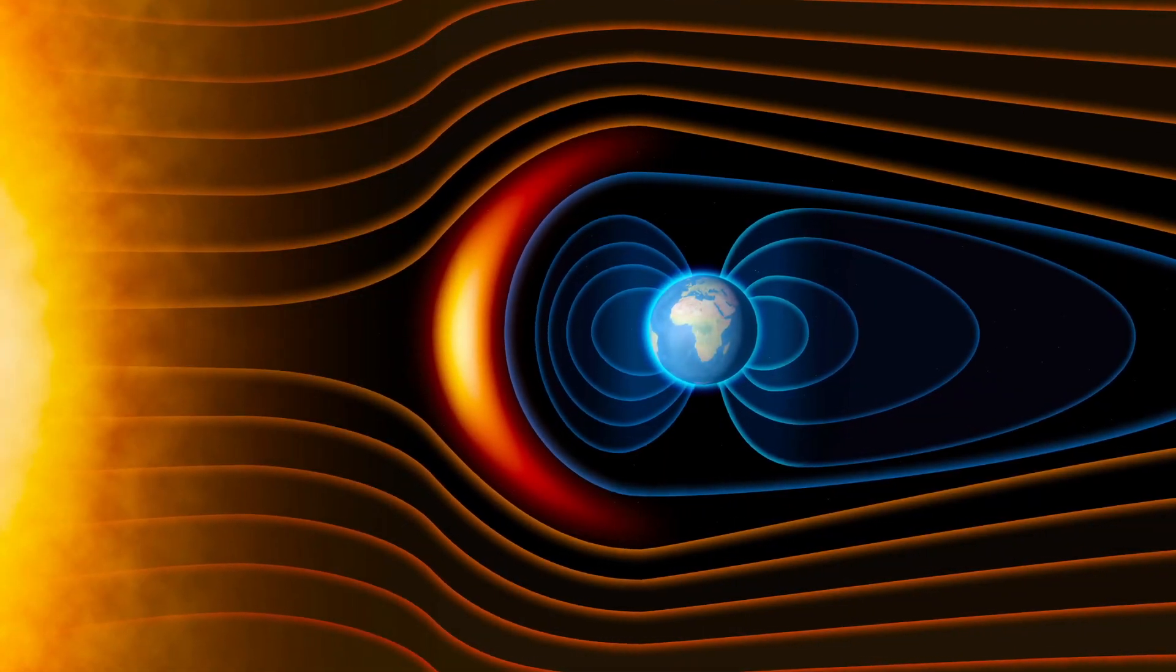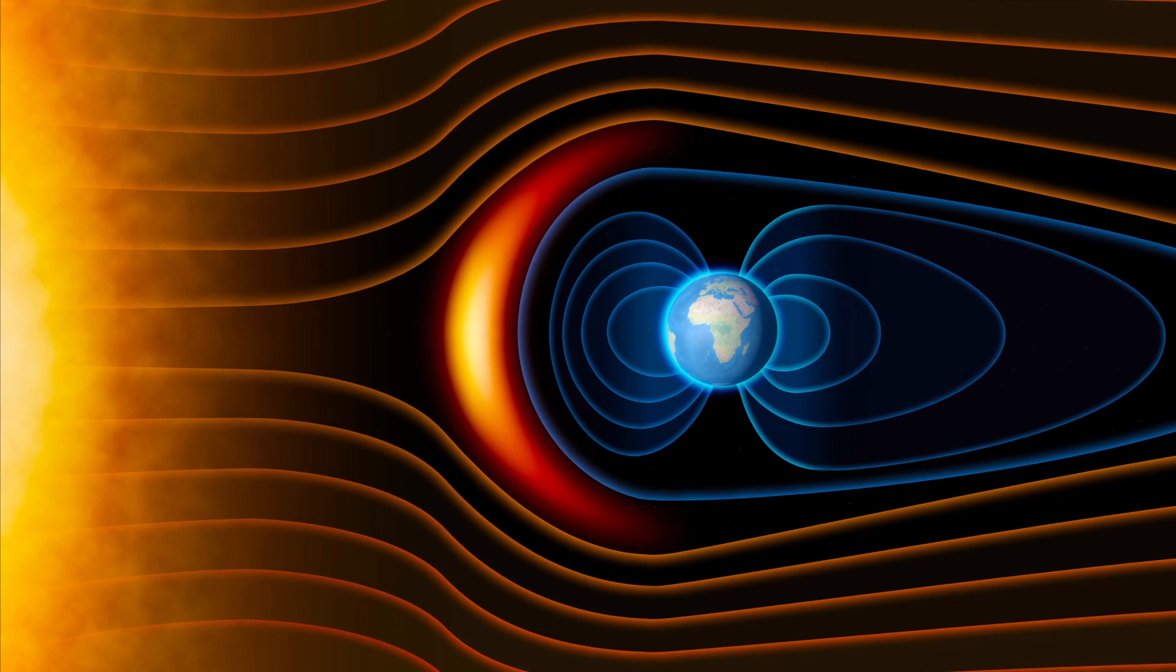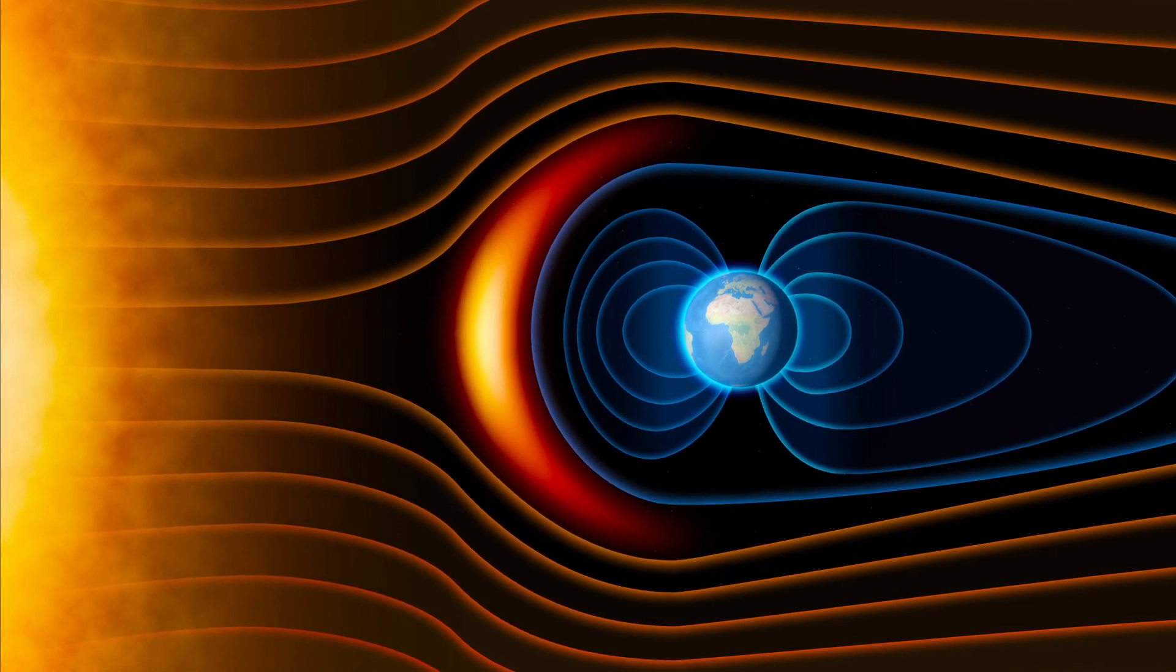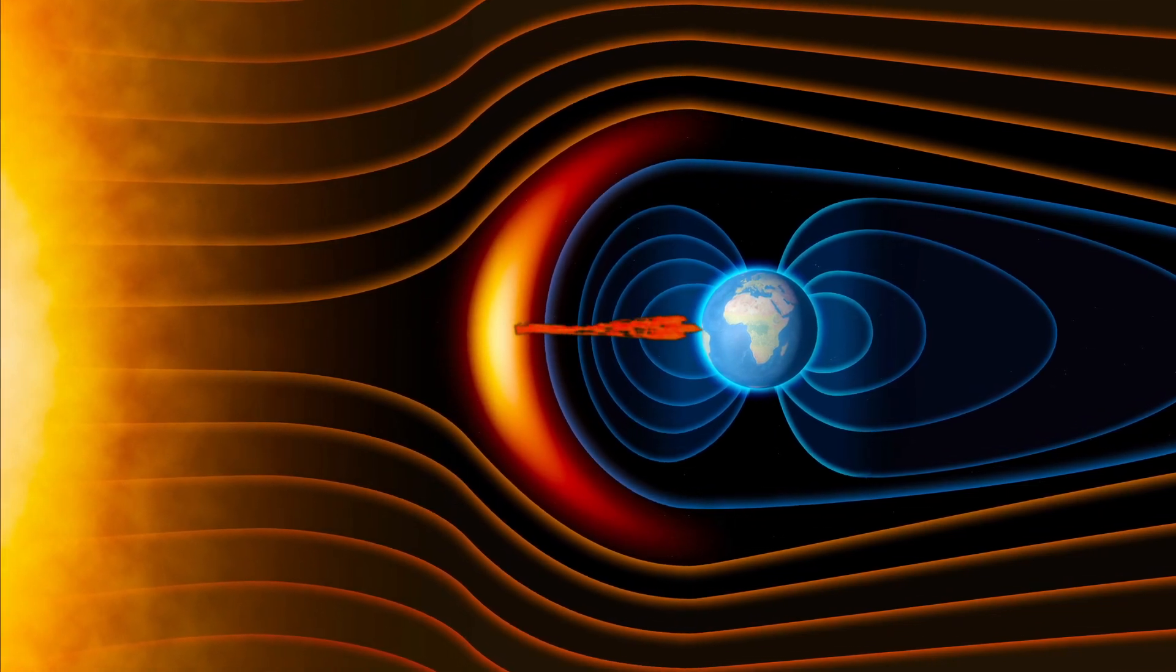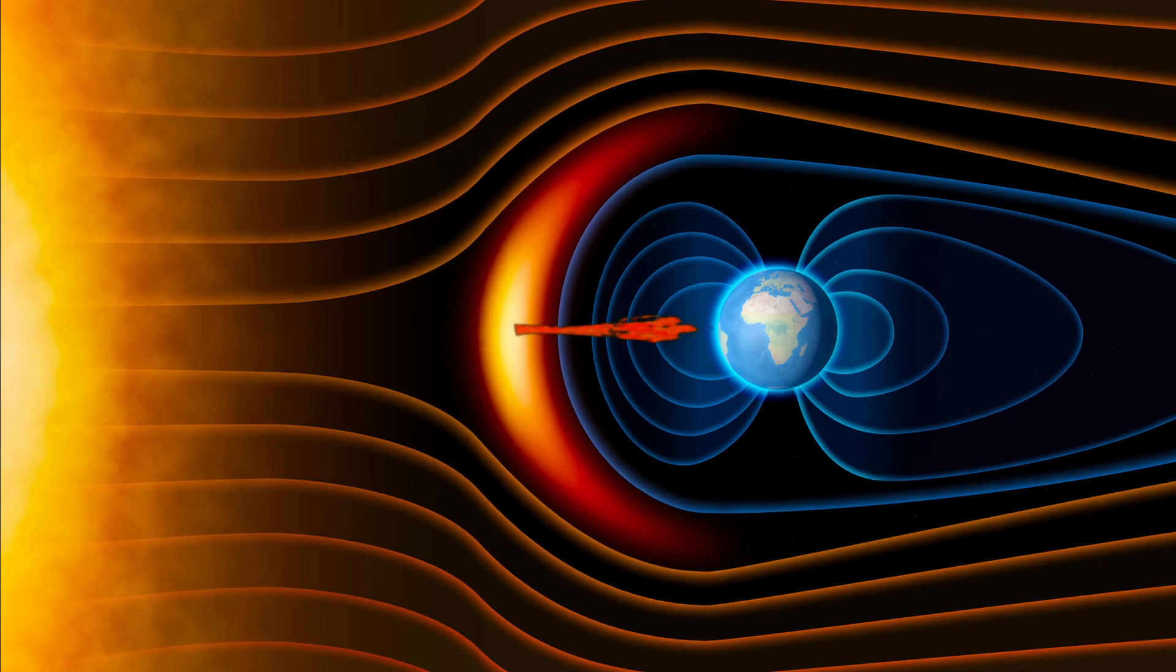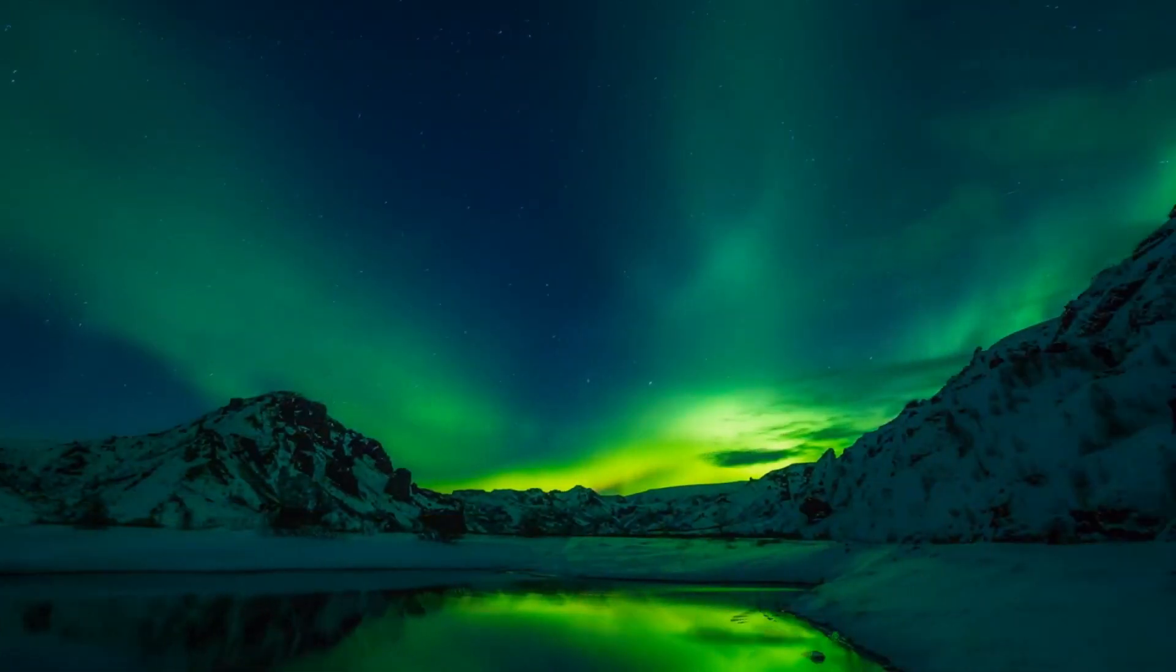Actually, our planet's magnetic field forms an invisible shield that protects us from the solar wind, but from time to time the solar wind gets stronger and penetrates the Earth's magnetic field.